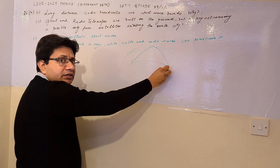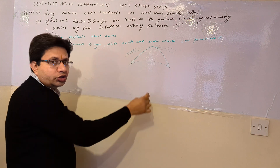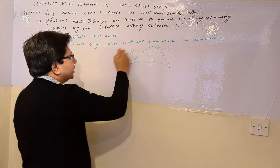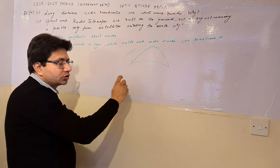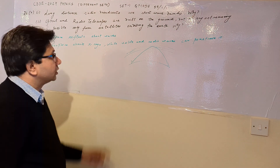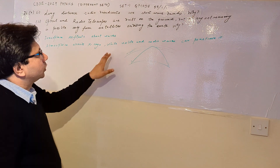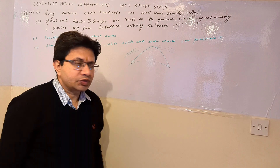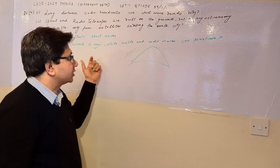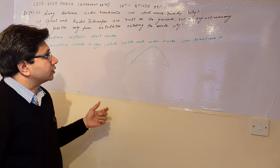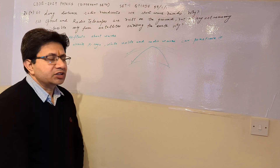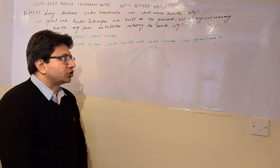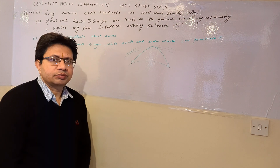Satellites are used to detect x-rays because visible light and radio waves can penetrate the atmosphere, whereas x-rays cannot — they are absorbed by the atmosphere. That is why x-ray astronomy must be conducted from satellites. Hope you understand the solution, thank you.